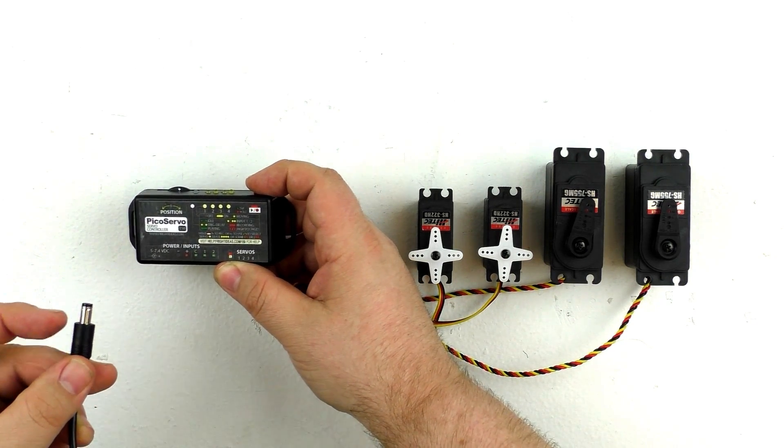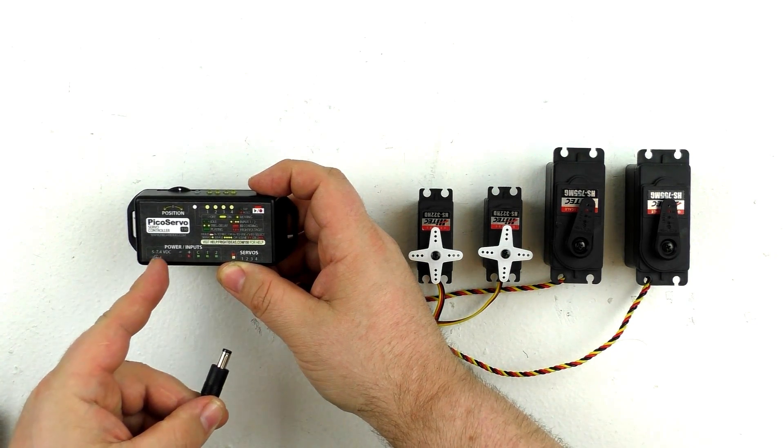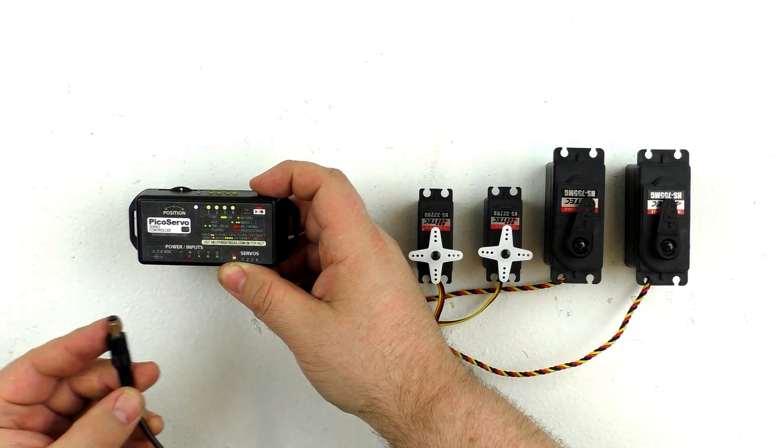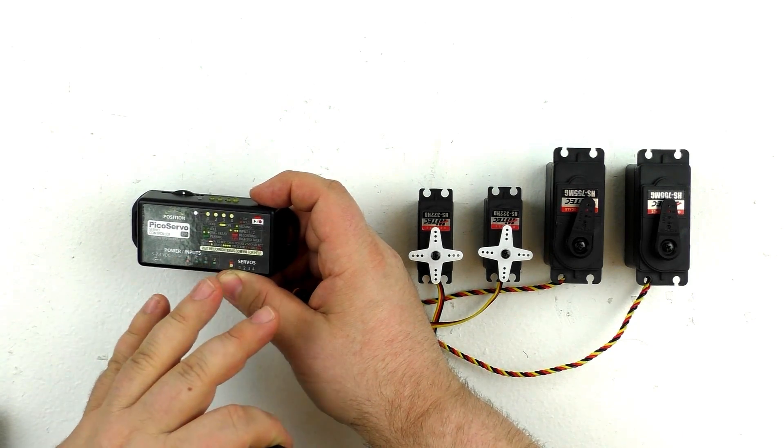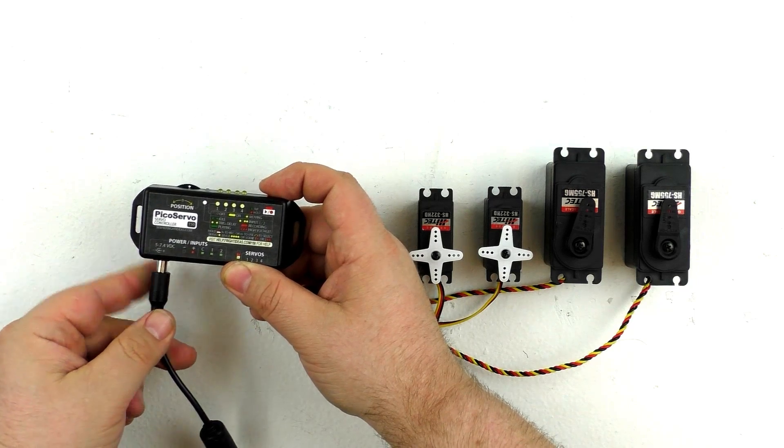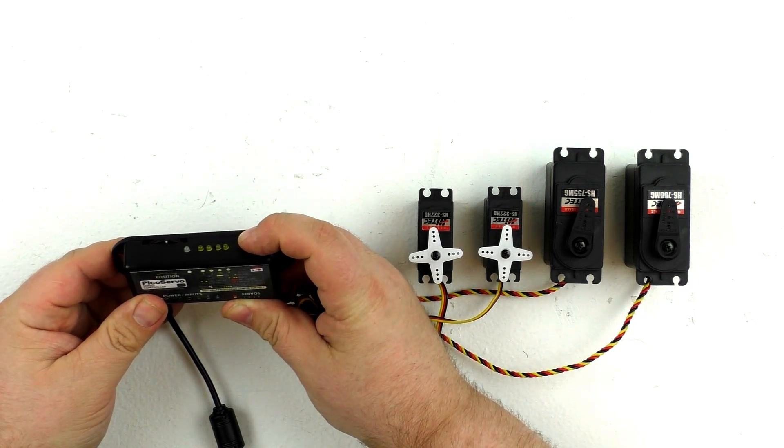Now, the PicoServo uses between 5 and 7.4 volt DC power. We're using a 6 volt power supply, most servos run at about 6 volts. So we're going to plug that in while holding down the record button.